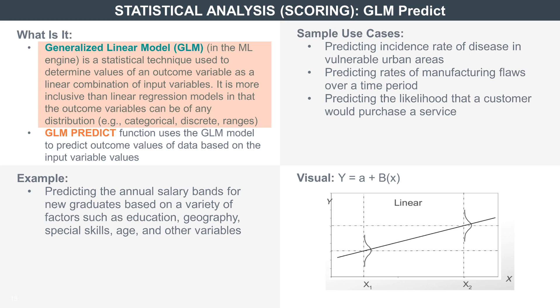we need something that intelligently understands the nature of the variables and applies the right kind of statistics to predict likelihood instead of dollar price. This model is the generalized version of the linear model, called the generalized linear model, or GLM.